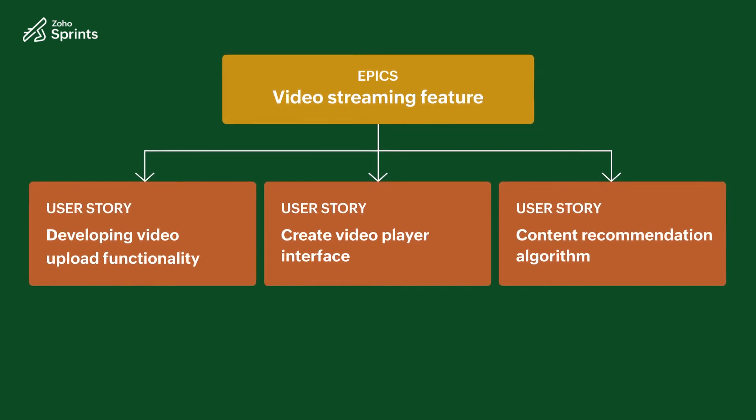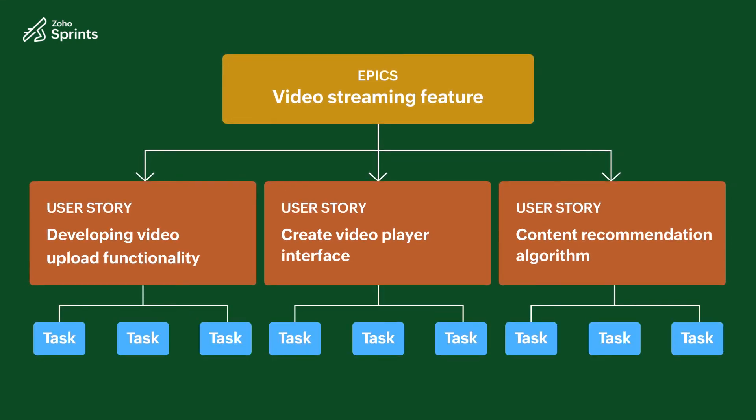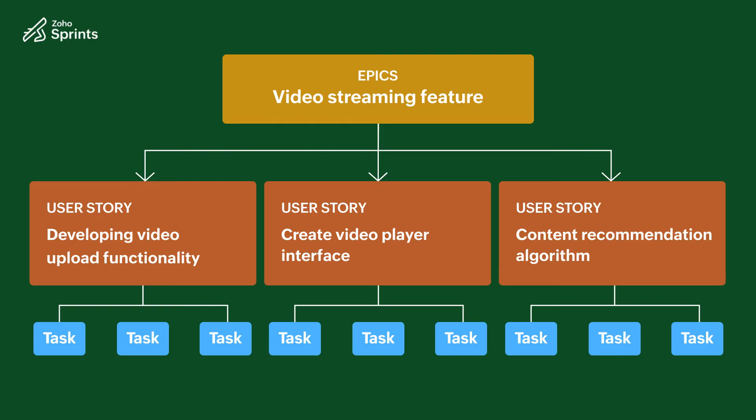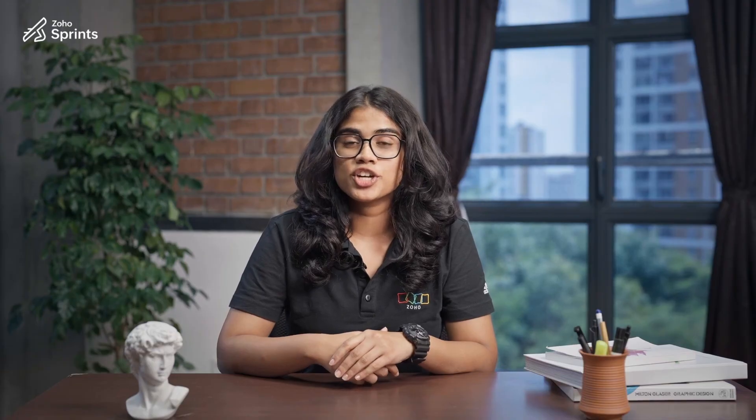Each of these user stories could be further divided into smaller tasks and might involve different teams such as UI/UX, backend development, legal, and quality assurance to get your feature up and running efficiently. While EPICs might not encompass everything in Agile project management, they do play a very crucial role in structuring and organizing complex projects, enabling teams to envision the project better and achieve project goals with clarity.